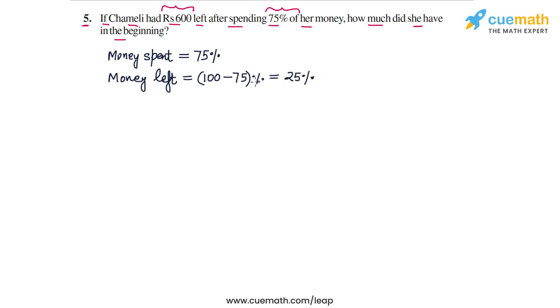Chamelee has 25% of the original money left and this is equal to Rs. 600 because we are told that she has Rs. 600 left. This means that 25% of original money, the original amount is equal to Rs. 600 and from here we have to find the original amount.